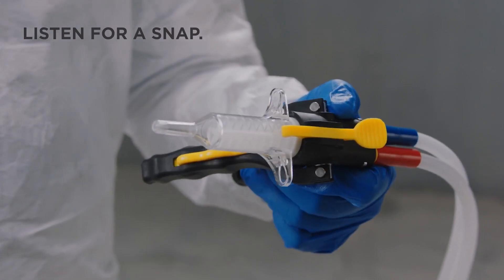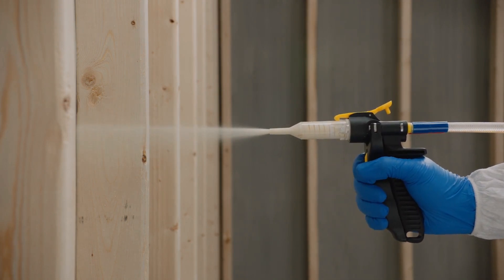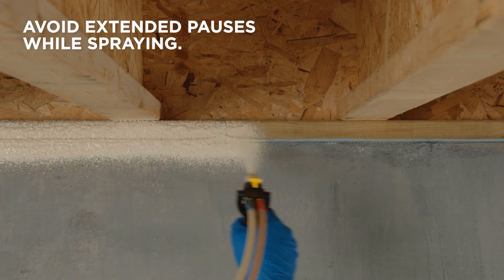Push the nozzle firmly into the InstaFlo dispenser. Hold the dispenser at least 15 centimeters away from the spray area and fully engage the spray trigger when you're ready. Avoid pauses of more than 30 seconds while spraying to prevent foam from curing in the nozzle.